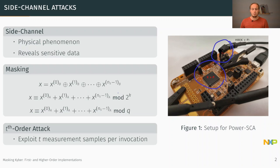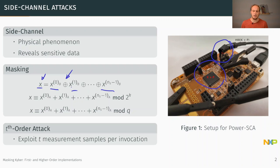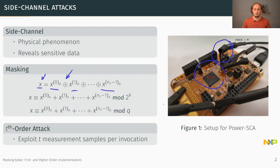Masking is a countermeasure against this. For a sensitive value x, it splits x into multiple shares x0, x1, up to xn. There are different forms of sharing relevant for post-quantum crypto schemes. The sum over all shares using boolean XOR is equivalent to the original sensitive value x, and this boolean sharing allows performing boolean operations on masked values quite easily. Alternatively, if we wanted to perform arithmetic computations with a shared value, arithmetic sharing would be much more helpful, using arithmetic addition over shares in a certain ring with a certain modulus.